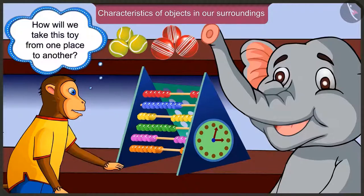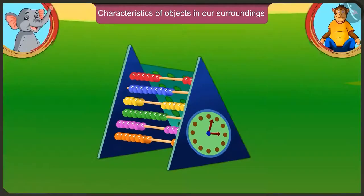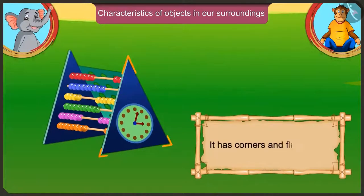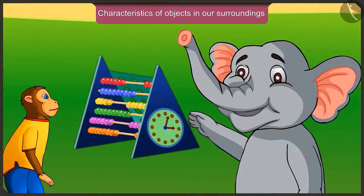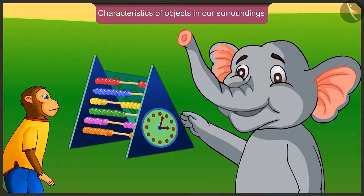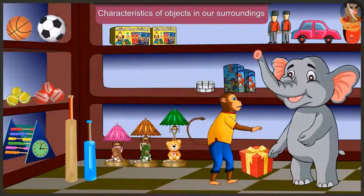Appu, how are we going to take this toy from one place to another? Oh, this is a very big toy. It is not round, it has corners and also a flat surface. For that reason, we cannot roll it like a ball. We will slide it like this. Well done.